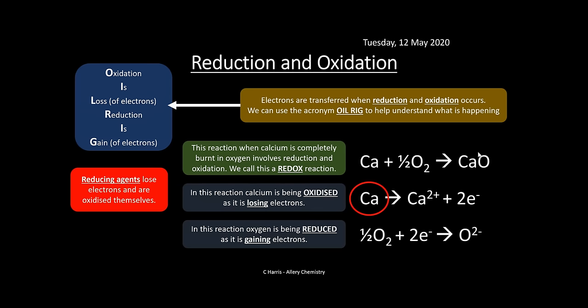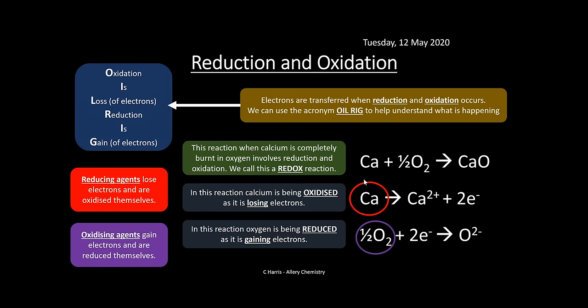Be careful with the distinction between oxidation/reduction and oxidizing/reducing agents. Reducing agents lose electrons and are oxidized themselves — calcium is the reducing agent here. Oxidizing agents gain electrons and are reduced themselves — oxygen is the oxidizing agent, gaining two electrons and going from 0 to −2.